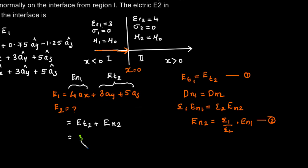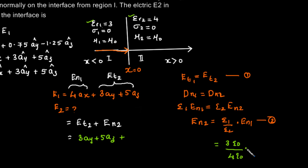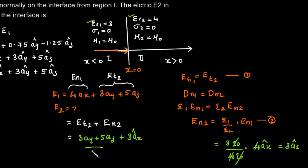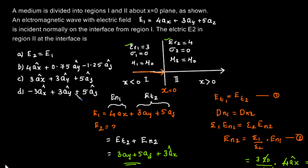The normal component is found using epsilon 1 equal to 3 epsilon 0 and epsilon 2 equal to 4 epsilon 0. So the normal component in medium 2 is epsilon 1 over epsilon 2 times 4ax, which gives 3 over 4 times 4ax, equal to 3ax. Therefore E2 equals 3ay plus 5az plus 3ax. The correct option is option C.